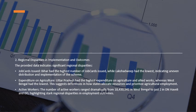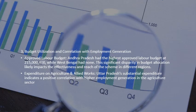Regarding regional disparities: Bihar has the highest job card issues while others have the lowest, indicating uneven distribution. Uttar Pradesh has the highest expenditure on agriculture and allied works whereas West Bengal has the lowest, suggesting differences in how states allocate resources. Active worker numbers range dramatically across states, highlighting stark regional disparities in employment outcomes.